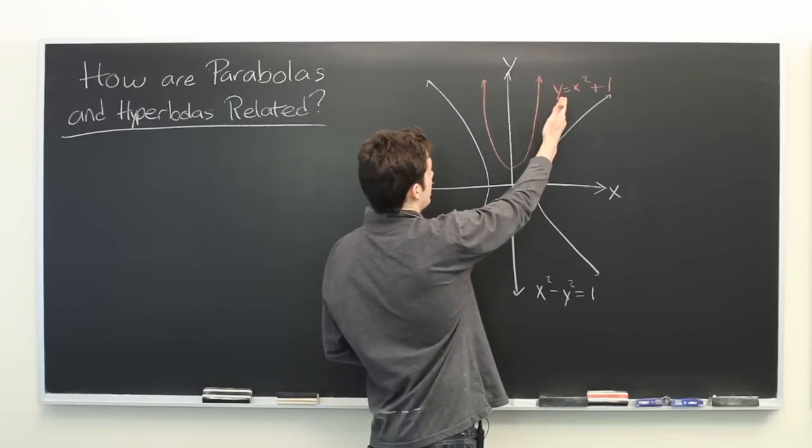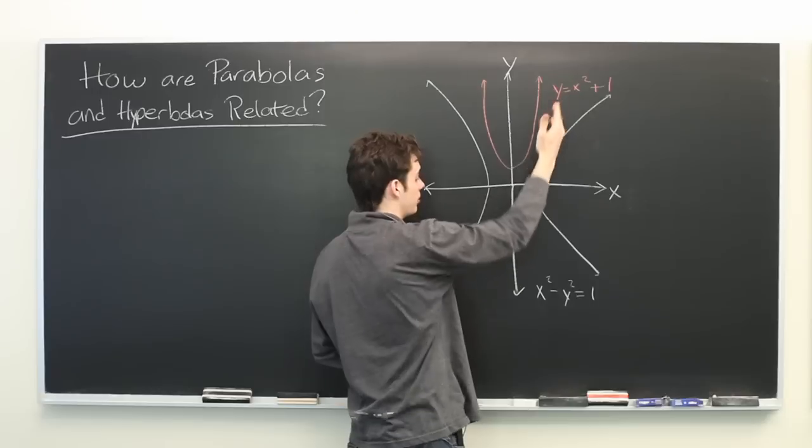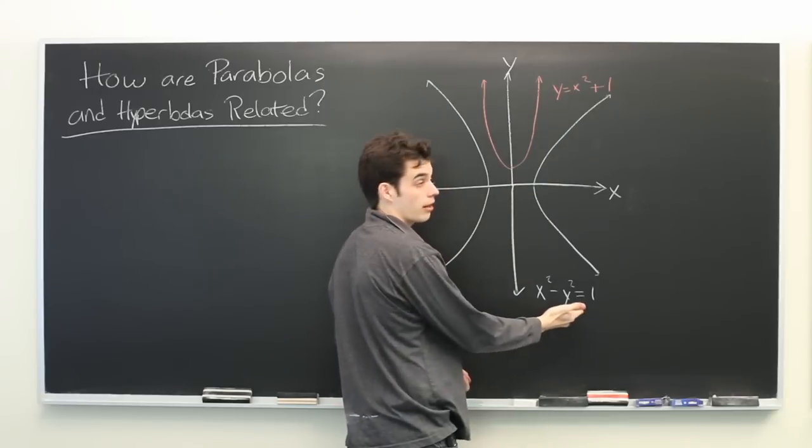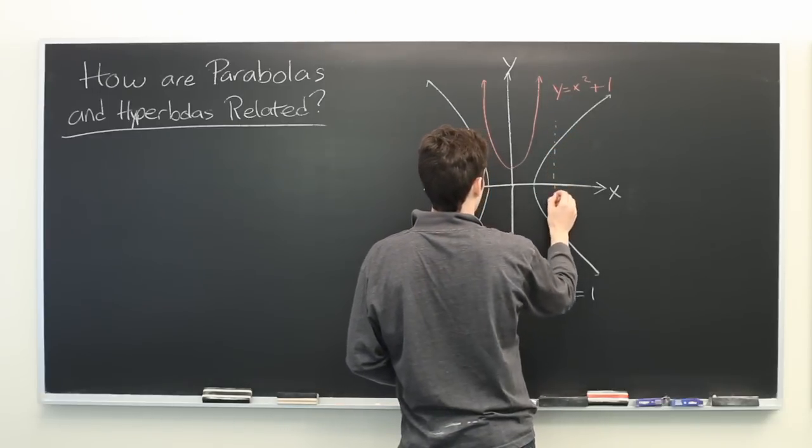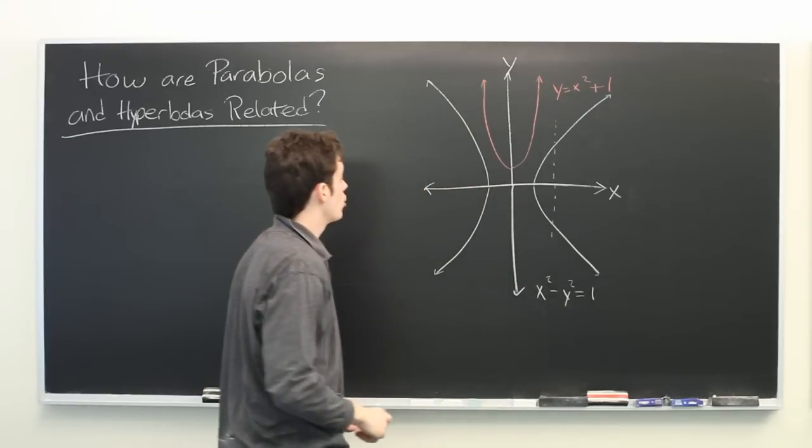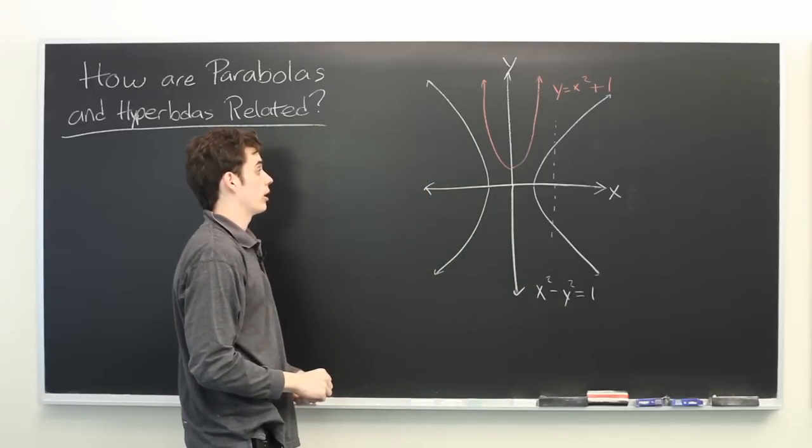After all, this one is a function that is explicitly defined and this is not a function. You can see it does not pass the vertical line test. So it might not appear that there is any real relation between them.